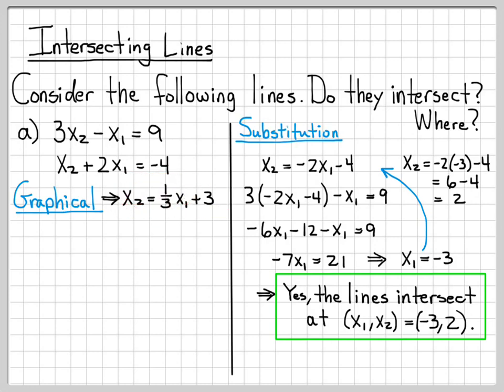And then I can do the same thing for my second equation, move 2x1 to the other side, and I end up with x2 equals negative 2x1 minus 4. Now what I'm going to do now is I'm going to plot both of these in the x1 and x2 plane. These are basically just lines.